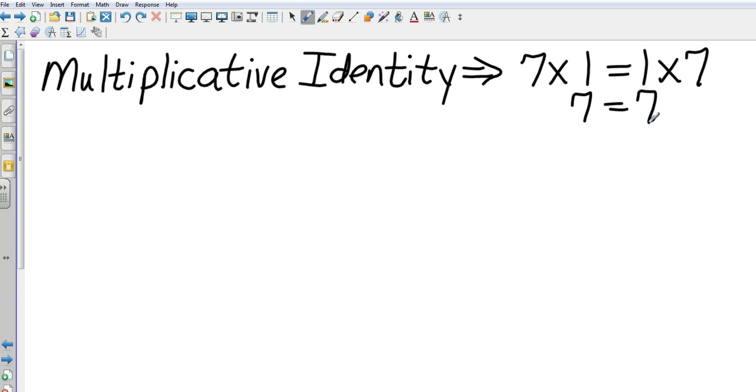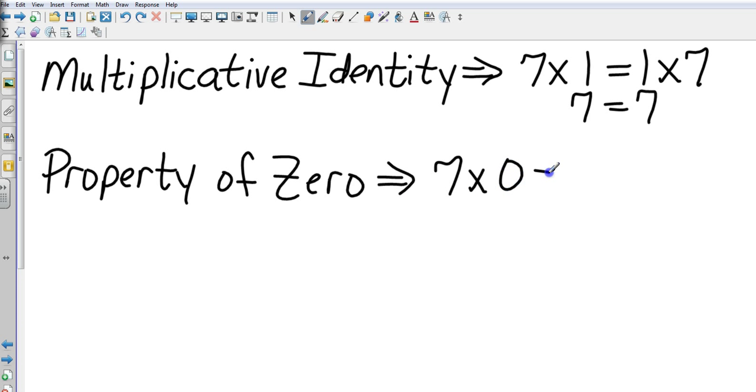Then we have the multiplicative property of zero. That is just what it says. Anytime I multiply something times zero, then it is just going to equal zero. Any number times zero is zero.